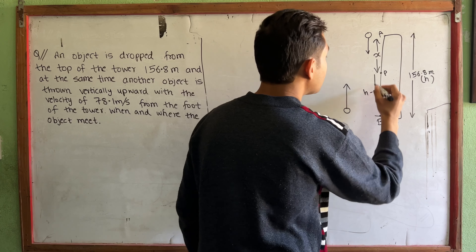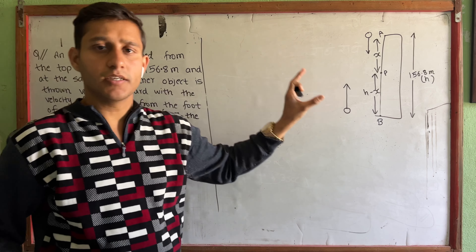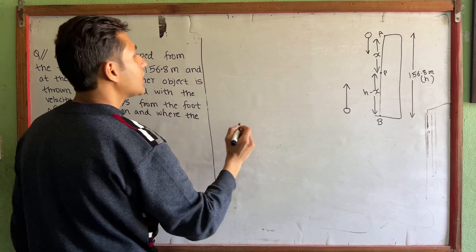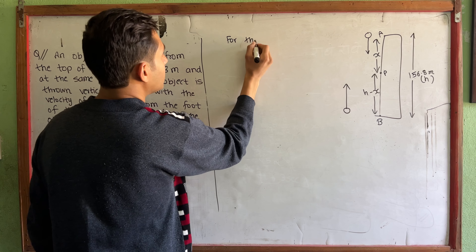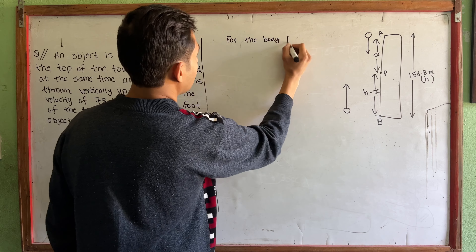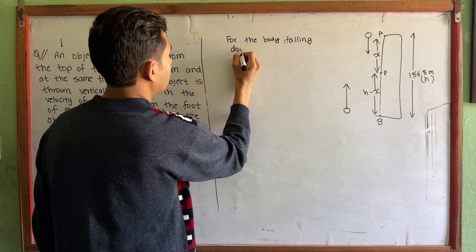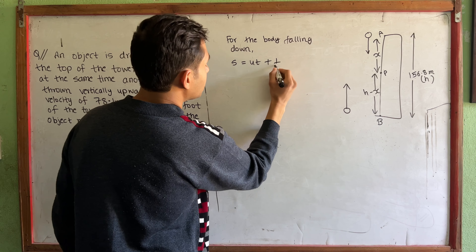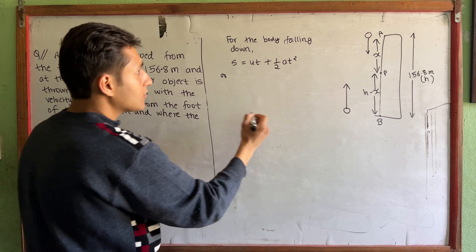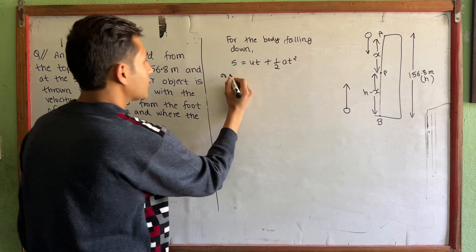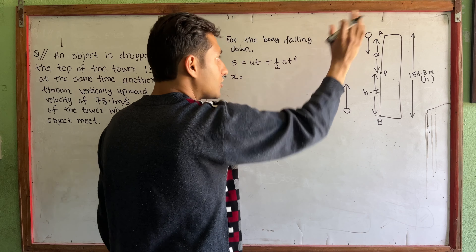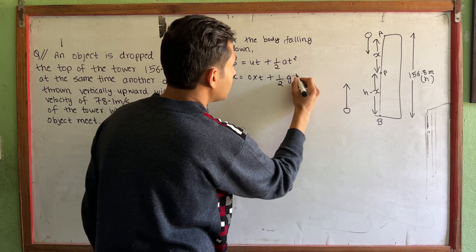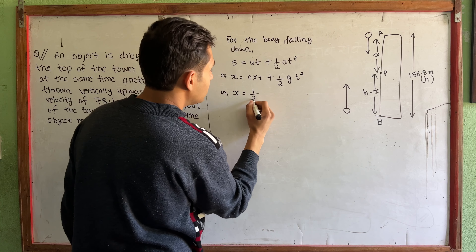This is a simple concept. For the body falling down, the initial velocity is 0, so x equals 0 times t plus one-half g t squared. Therefore x equals one-half g t squared. This is equation 1.